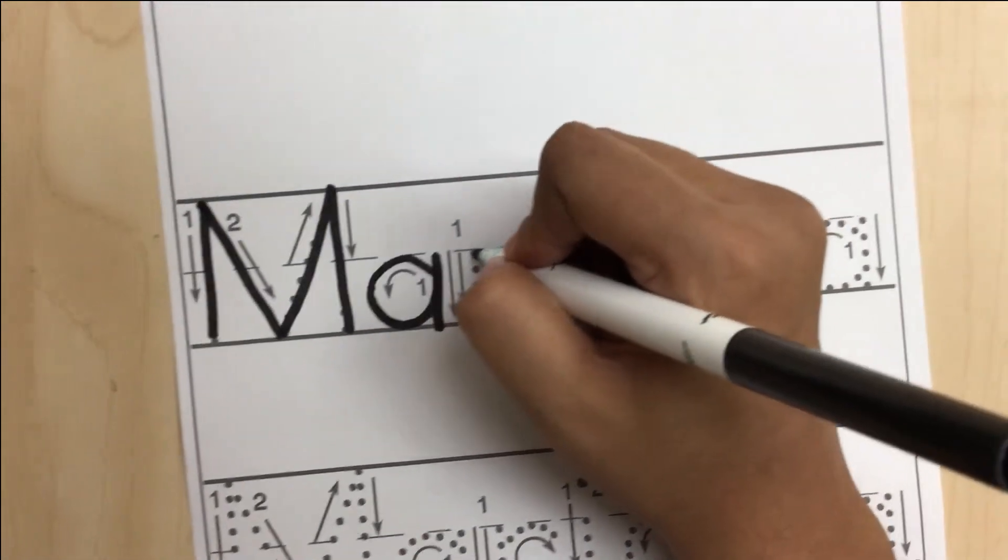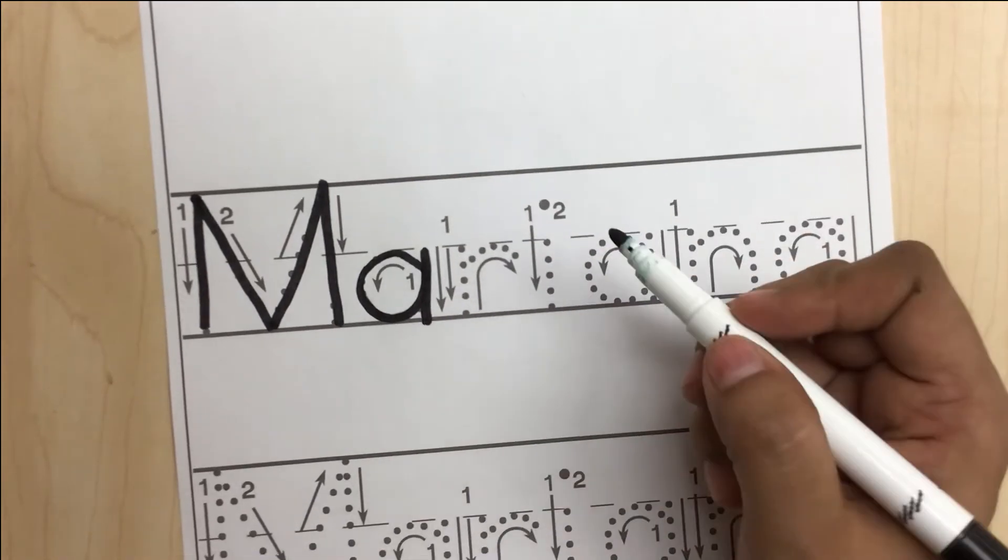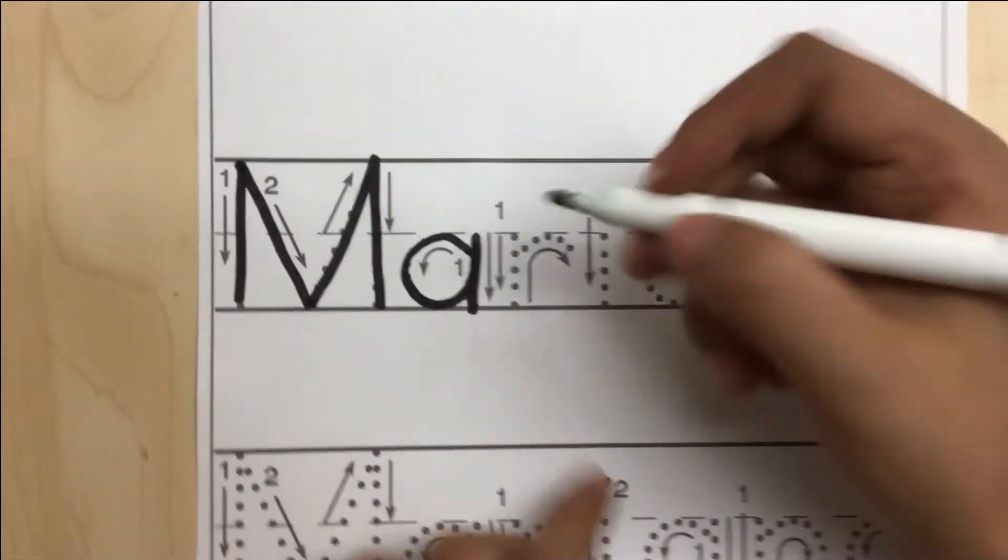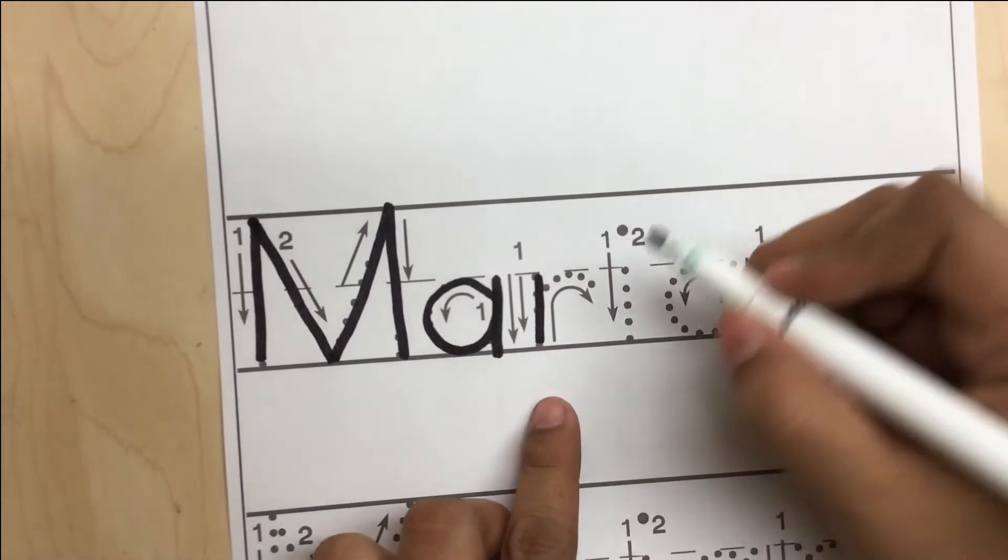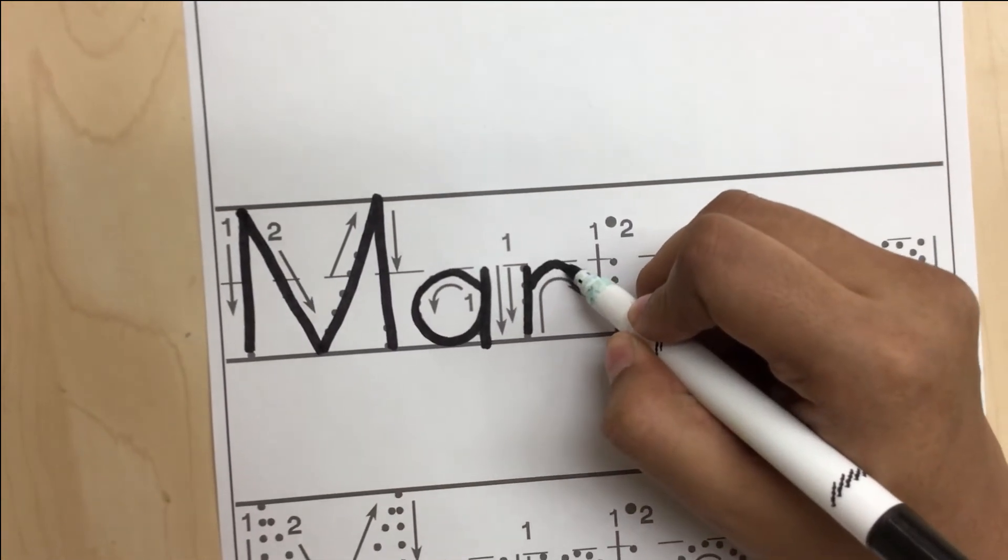For letter R, you're going to do the same thing. We're going to look for number one and the arrow. You're going to follow it and trace it. Touch the broken line and make a little curve.